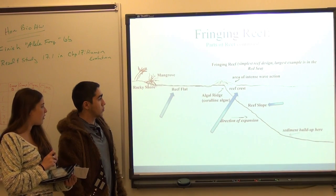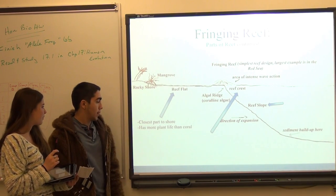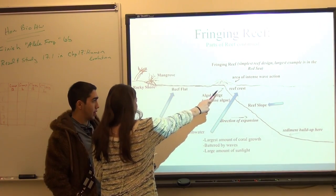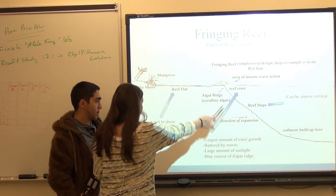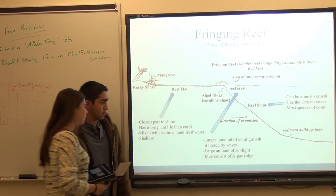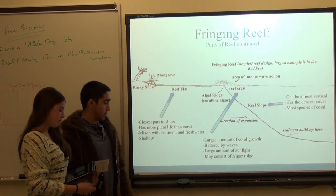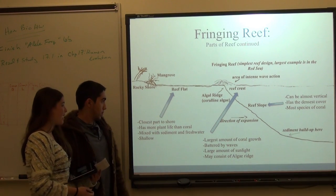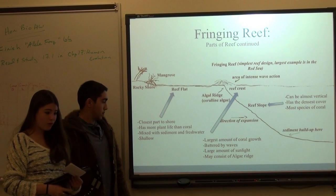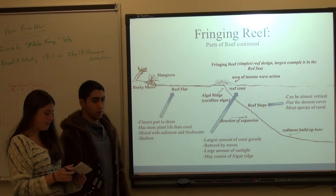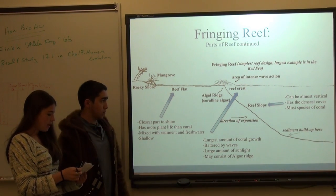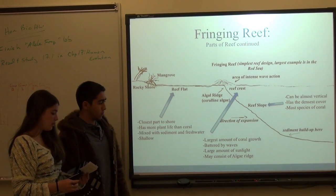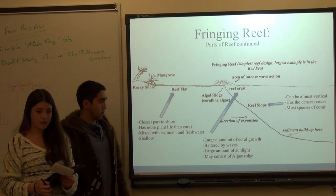To put what we just told you with the visual: you have the reef flat, the algal ridge up here right above the reef crest, and then the reef slope. Some additional facts: the reef flat has more plant growth than coral, and the reef crest gets the most amount of sunlight.